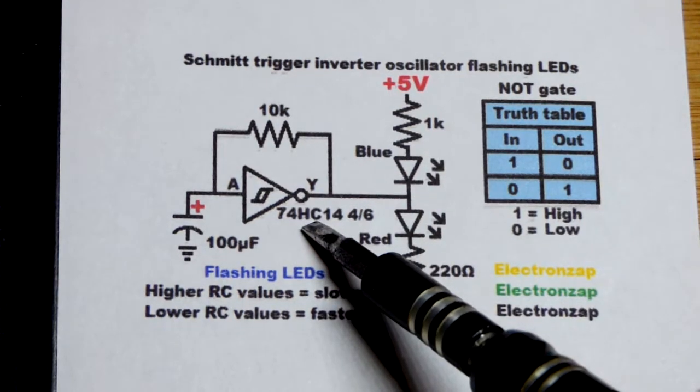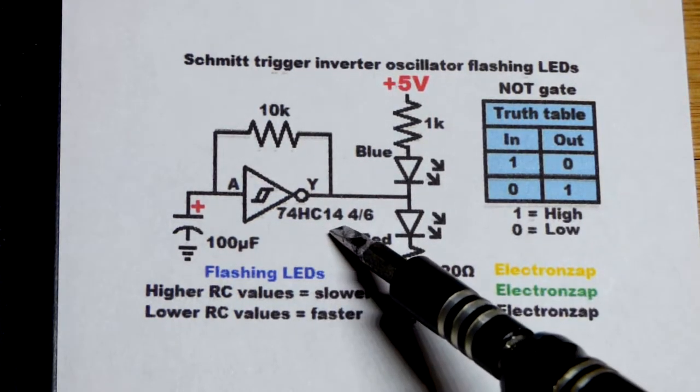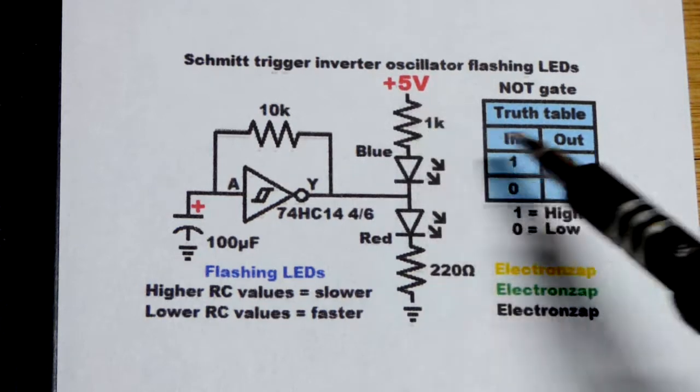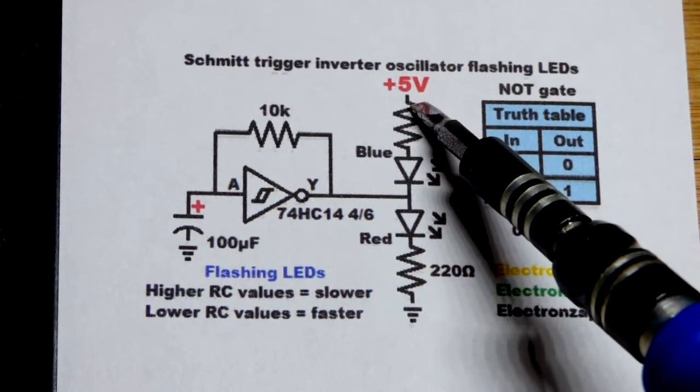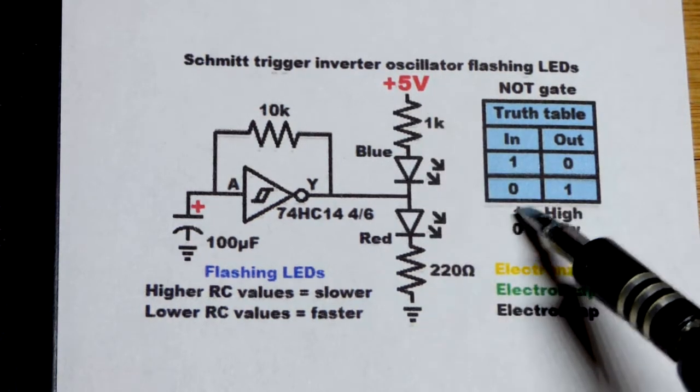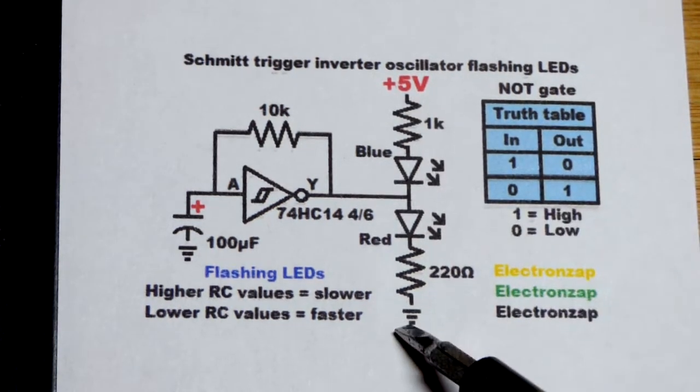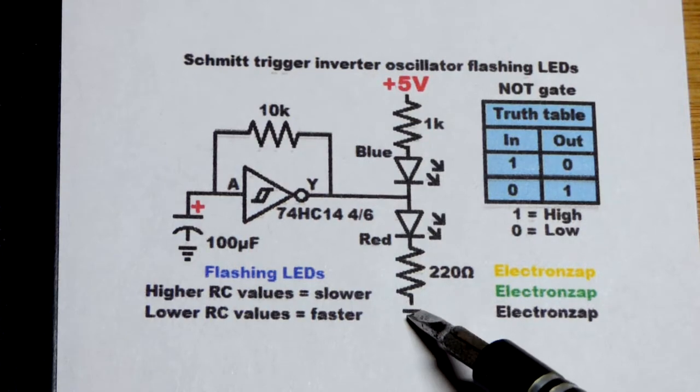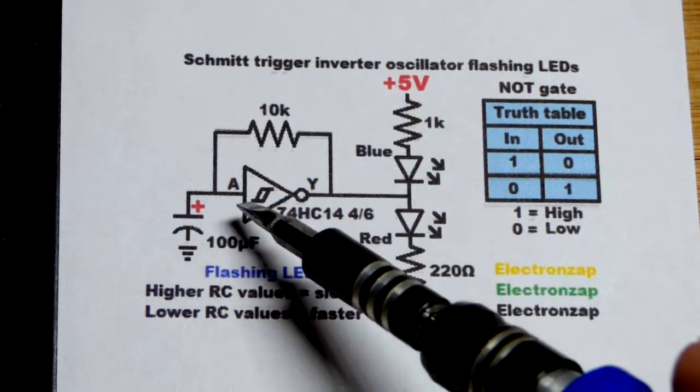In this circuit we're powering the integrated circuit here, the 74HC14, with 5 volts. So 1 is relatively close to 5 volts. They're not exact voltages, but relatively close to 5, and 0 is relatively close to 0 volts or ground right there.